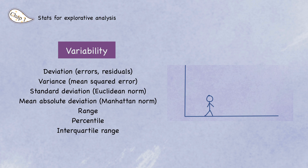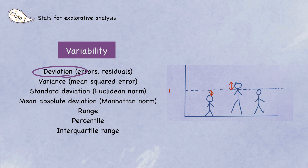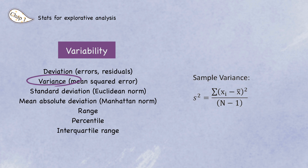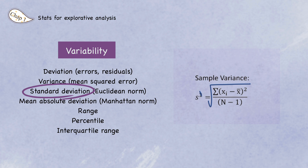Now let's look at the different estimates for variability of the data. Deviation is the difference between the observed values and the mean, also known as errors or residuals. Variance, or mean squared error, is the sum of the squared deviations from the mean divided by n minus one, where n is the number of data values. The reason it's divided by n minus one is as a correction for the underestimate of the true population variance when using a sample. Standard deviation, also known as the Euclidean norm, is simply the square root of the variance.